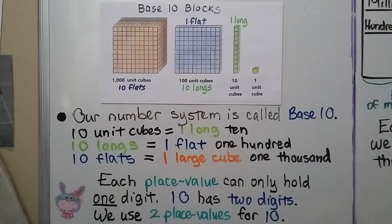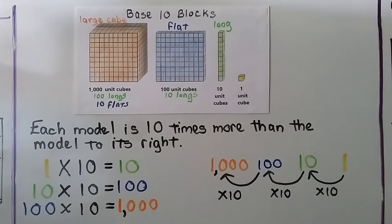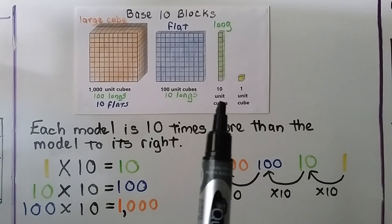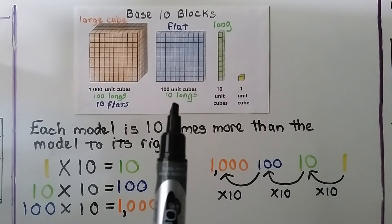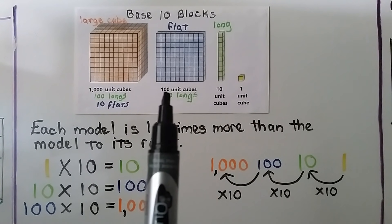Our number system is called base ten. Ten unit cubes equals one long. Ten green longs equal one blue flat — that's one hundred. Ten blue flats equal one large cube — that's one thousand. Each place value can only hold one digit, and ten has two digits so we use two place values for ten: a ones place and a tens place. Each of these models is ten times more than the model to its right. The green long is ten times more than the unit cube, the blue flat is ten times more than the green long, and the orange cube is ten times more than the blue flat.